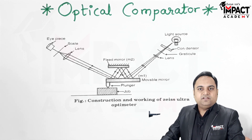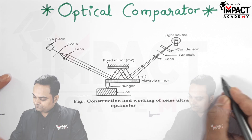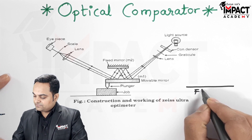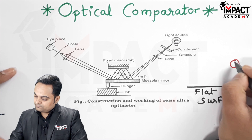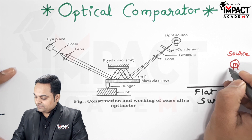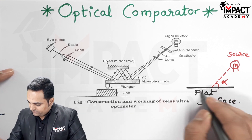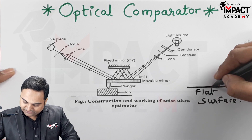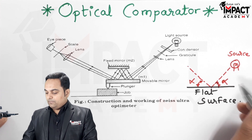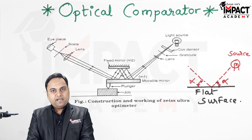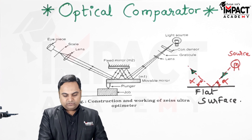The basic principle is: if we have an exactly flat surface and from a light source the light is incident on that flat surface at an angle of alpha, then the surface being flat, the light would be deflected at the same angle alpha — it returns back at the same angle by which it is incident. This means the surface is perfectly flat.